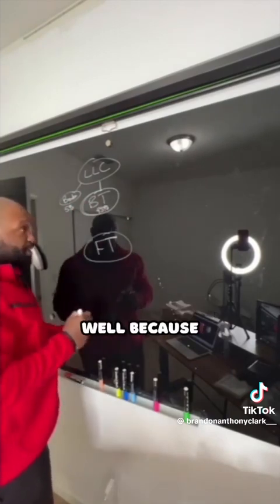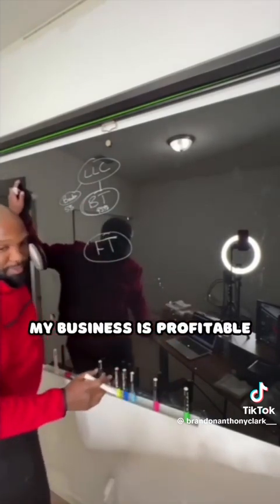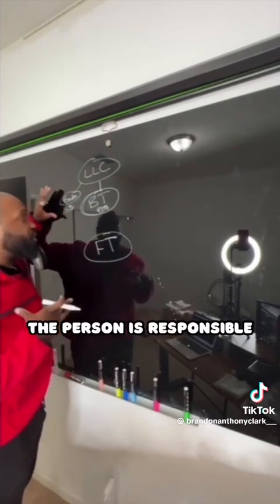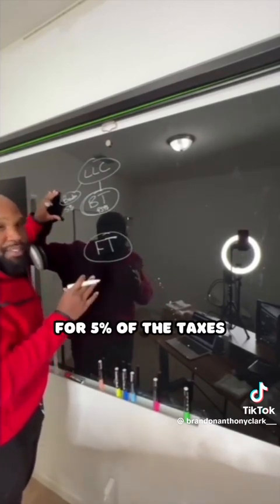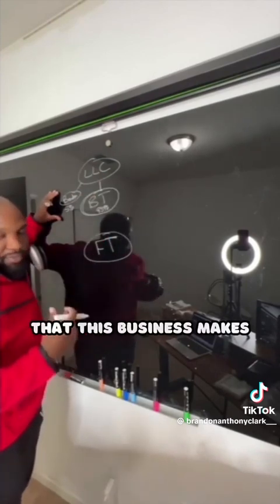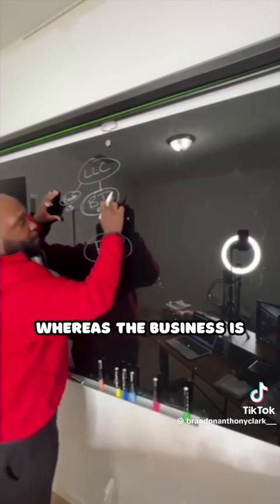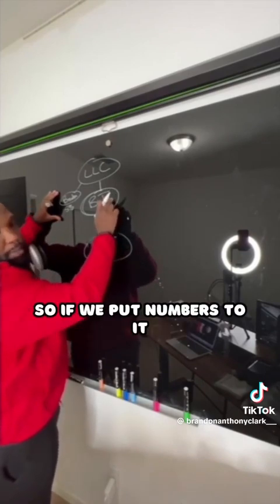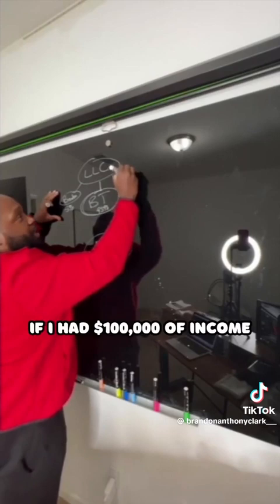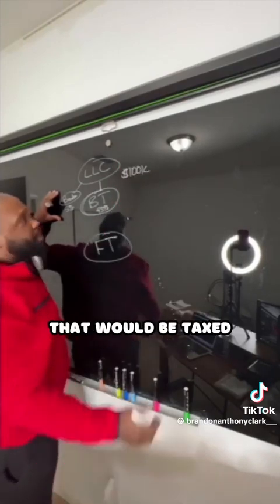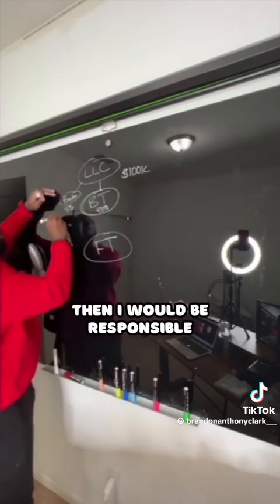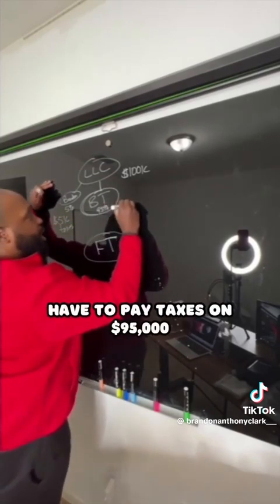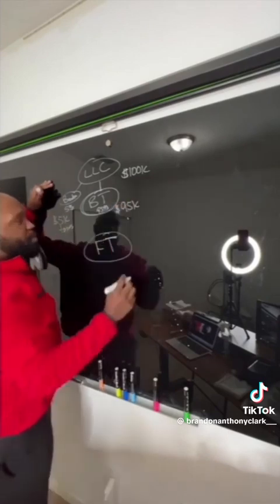So why do I set it up that way? Well, because my business is profitable. I, Brandon Clark, the person, am responsible for 5% of the taxes that this business makes as an individual person, whereas the business trust is 95% responsible for those taxes. So if we put numbers to it — if I had $100,000 of income that would be taxed, I would be responsible for $5,000 and the trust would be responsible for $95,000.